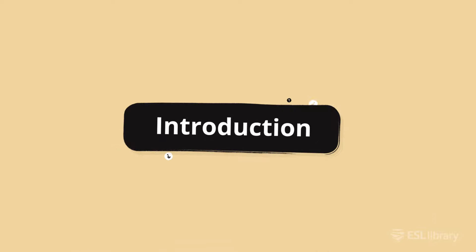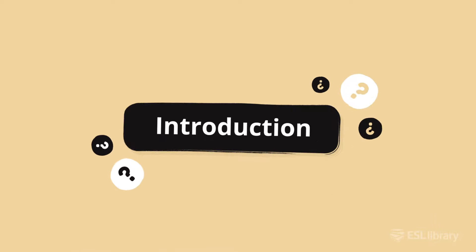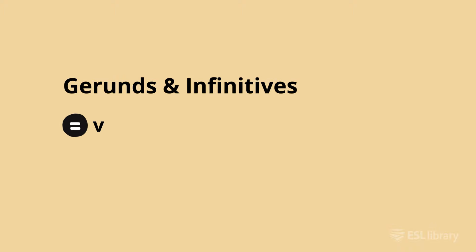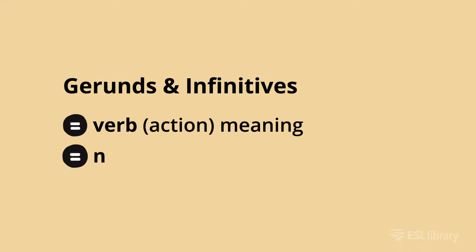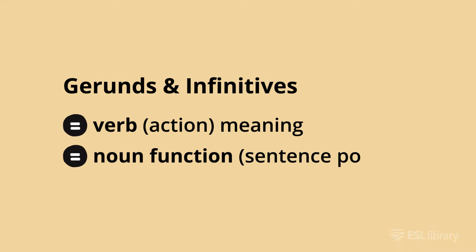What are gerunds and infinitives? Gerunds and infinitives are words with a verb meaning. They function as nouns in a sentence.